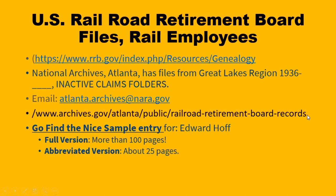The U.S. Railroad Retirement Board files — let's talk about those first with rail employees. In your notes and on the screen, you are seeing the actual place you can look for the RRB, the Railroad Retirement Board records. They are at the National Archives in Atlanta. They have files from the Great Lakes region, 1936 forward, and also many other inactive claims folders from across the United States. That's your key clue: inactive claims folders. If the person was active up to about 10 years ago, those things may not have been cleared yet. As they are cleared, they are taking more in — so check back again.